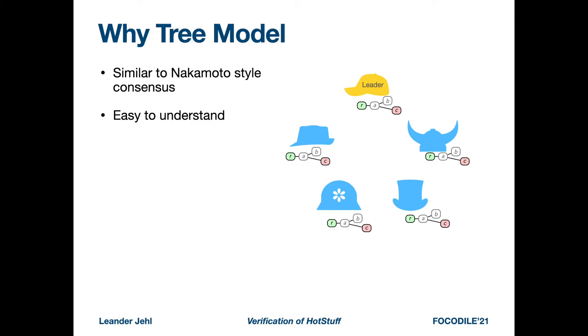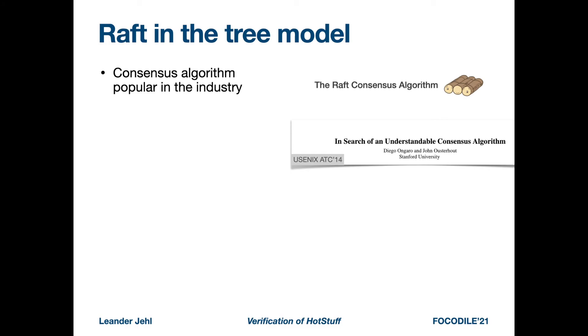Working with HotStuff, we were wondering if the tree model has a general advantage. One advantage I see is that it is similar to Nakamoto-style consensus. For example, in Bitcoin with proof-of-work consensus, processes also add blocks to a tree and select one branch. I also believe that at least simplified HotStuff is easier to understand than other BFT algorithms. I have been teaching HotStuff to my students in a course on blockchain technology and find that they understand it quite well.